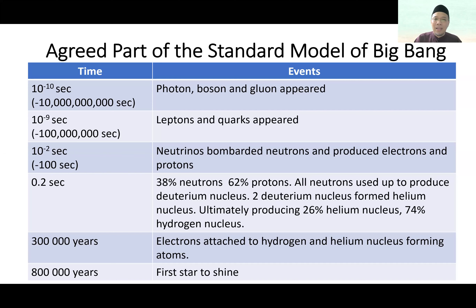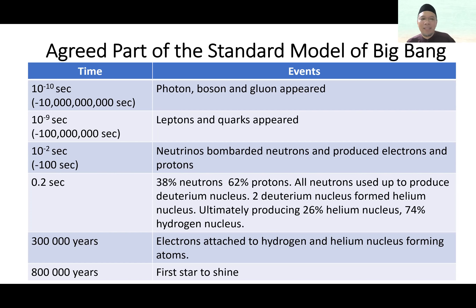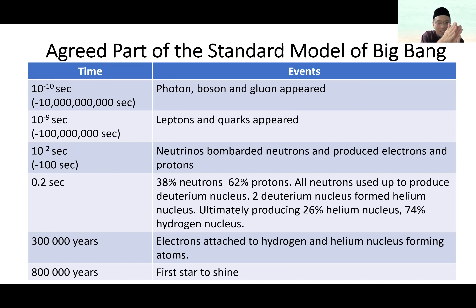So leptons and quarks appeared during that time — which is at 10 to the power of minus 9 seconds. At 10 to the power of minus 10 second — which means you take one second and divide into 10 billion slices — in the first slice after zero, that is when photon, boson, and gluon particles appeared. They are what we call the force particles. So photons and gluons appeared in that very, very fine slice of time: 10 to the power of minus 10 second.